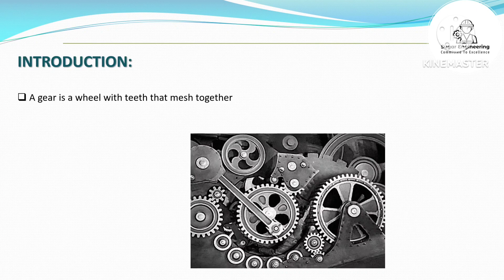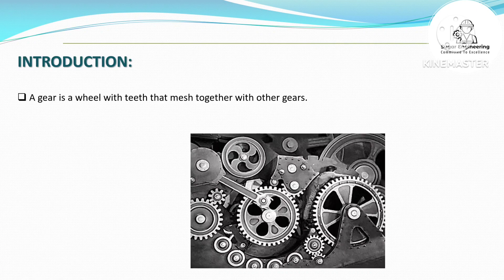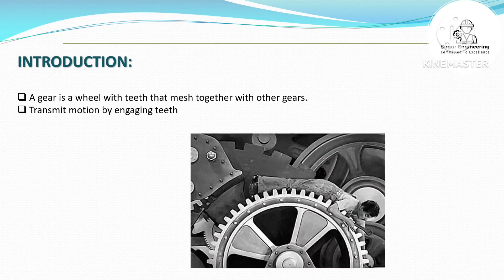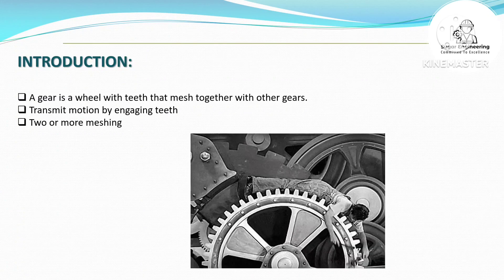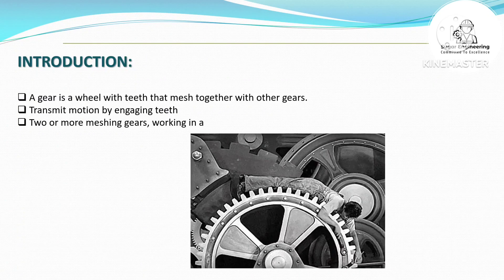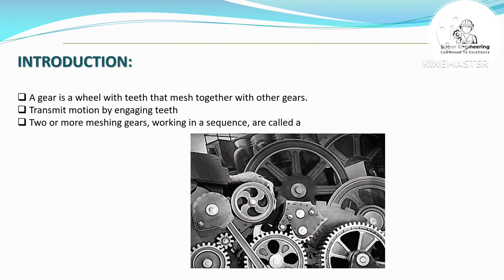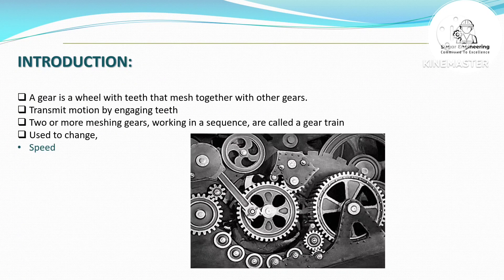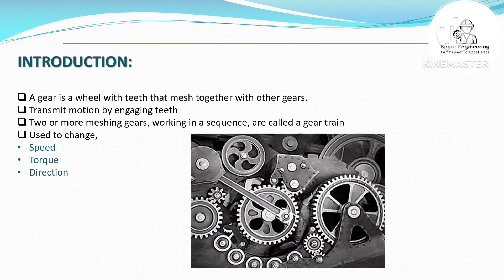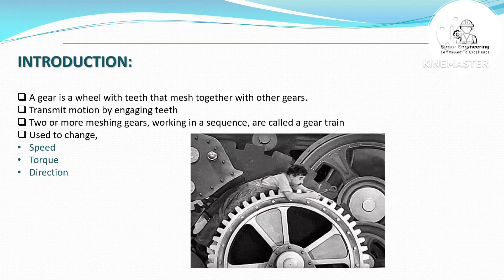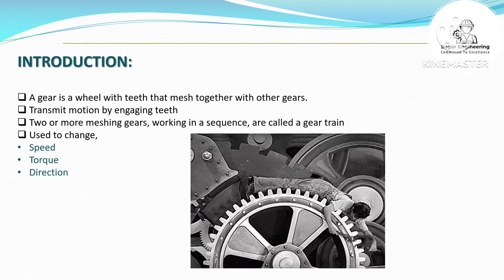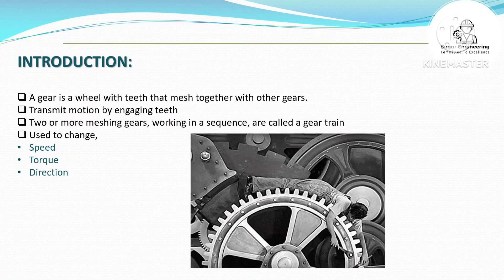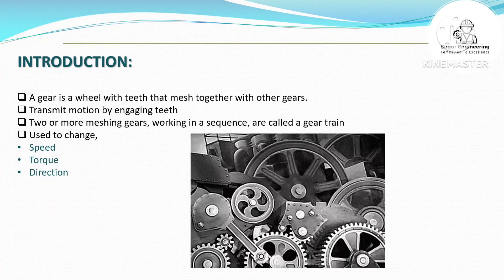A gear is a wheel with teeth that mesh together with other gears. Gears transmit motion by engaging teeth. Two or more meshing gears working in a sequence are called a gear train.